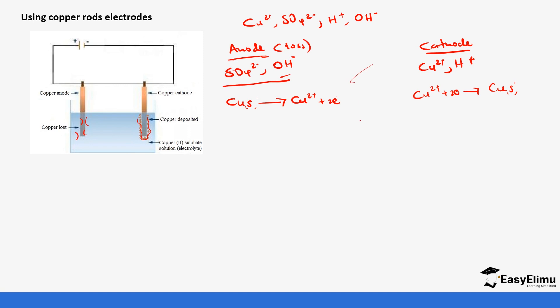The solution maintains its blue color as long as the copper anode is present. But when you use inert electrodes — because we are only removing copper ions — the blue color will change over time and turn colorless after some time.